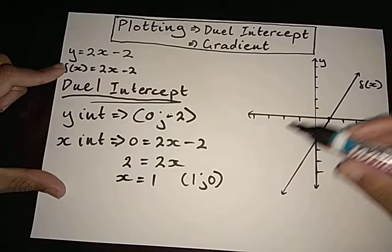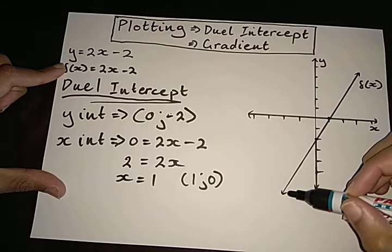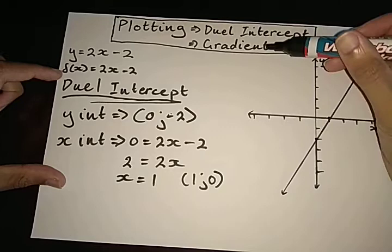Now that I've got one point, which is 0 and negative 2, which will be at this point, and 1 and 0, which would be at that point, I could take my ruler and run it through to plot the straight line graph.